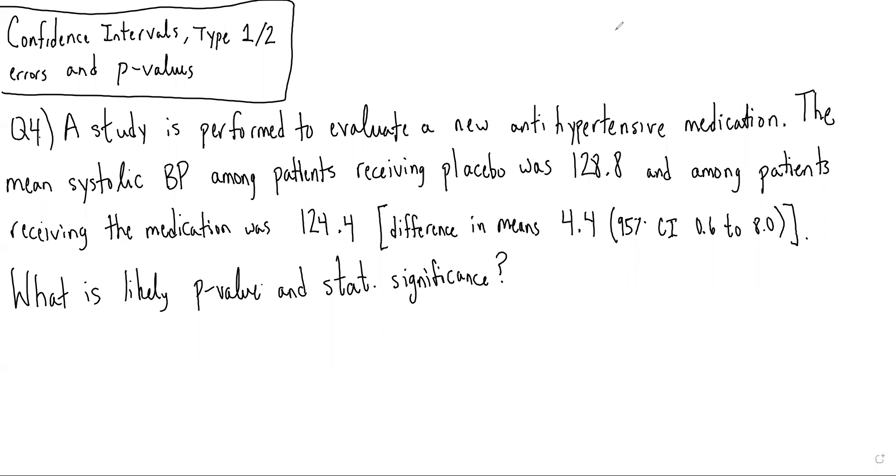In this case, the study is performed to evaluate a new antihypertensive medication. The mean systolic BP among patients receiving placebo was 128.8, and among patients receiving the medication was 124.4, with a difference in means of 4.4 and a 95% confidence interval extending from 0.6 to 8.0. We're asked, what is the likely p-value and statistical significance?